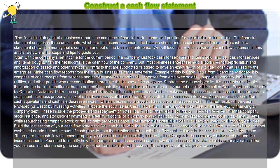Start with the company's net income for the current period. If a company just took cash for services and items sold, and paid cash for services and items bought, then the net income is the Cash Flow of the company. But most business enterprises add allowances for depreciation and amortization of assets and other non-cash contracts that are subtracted or added to have an exact report of cash provided or used by the enterprise.